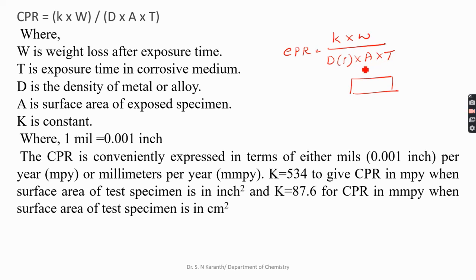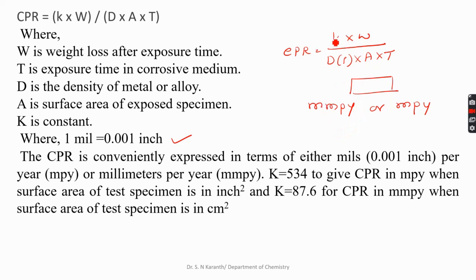The CPR may be expressed in two units: millimeter per year (MMPY) or mils per year (MPY). One mil is equal to 0.001 inch. If expressed in MMPY, the constant K takes the value 87.6 and the area should be expressed in centimeter square. If expressed in MPY, the constant K becomes 534 and the area should be expressed in inch square.